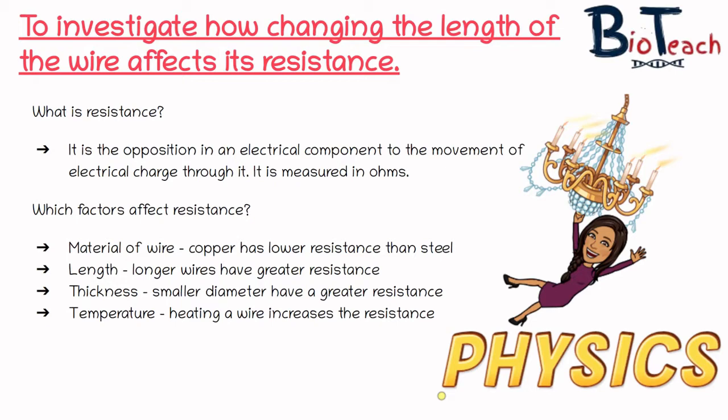The factors that affect resistance: first of all the material of the wire, for example copper has a lower resistance than steel. Another example is length - the longer the wire is, the greater the resistance. Then the thickness of the wire also makes a difference. If you've got a smaller diameter, you're going to have greater resistance. Lastly, the factor that affects most experiments in science is temperature. By heating up the wire you will increase the resistance as well.